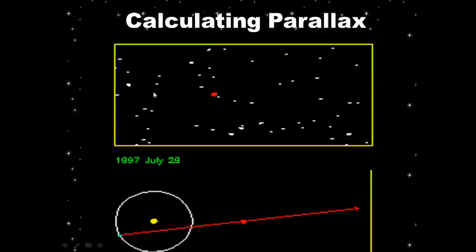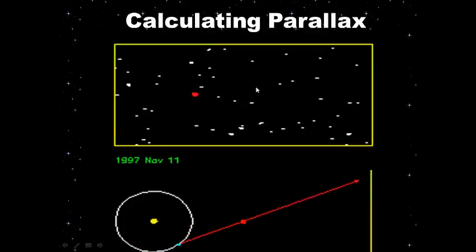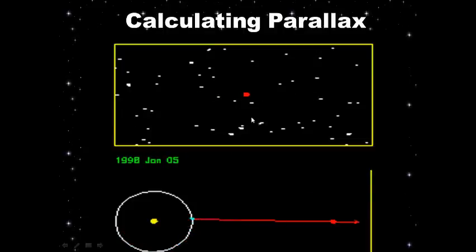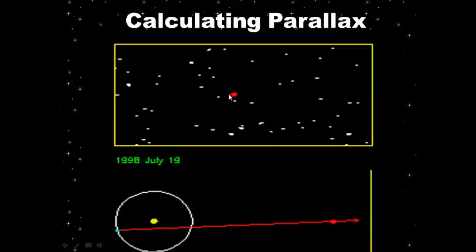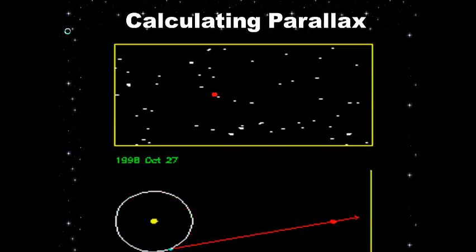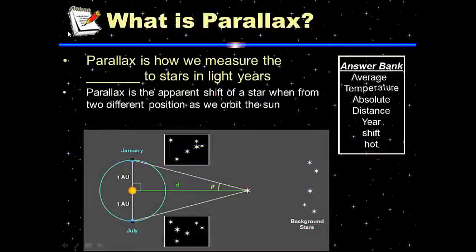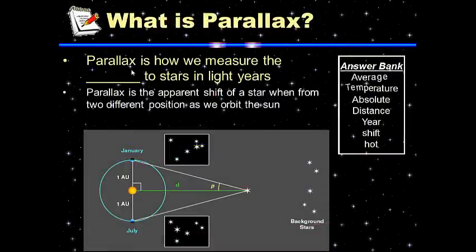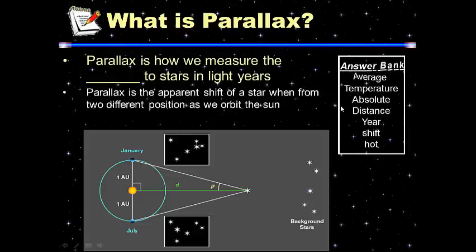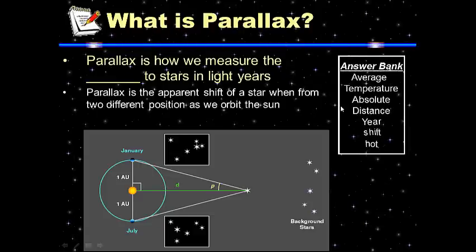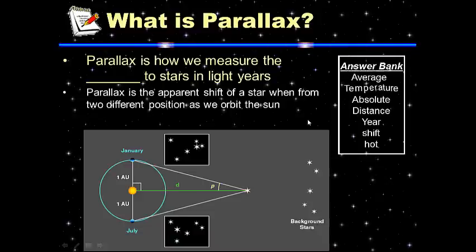To summarize: a nearby star has a large parallax shift, while a far away star has a smaller parallax shift. For your notes on what parallax is, read the passage and use the answer bank to fill in the blanks. Go ahead and pause the video while you write.